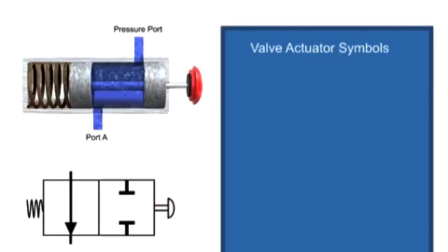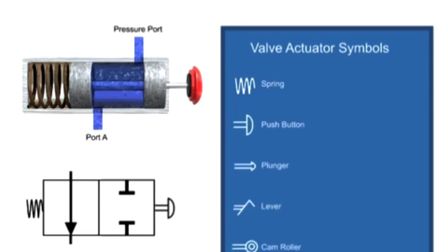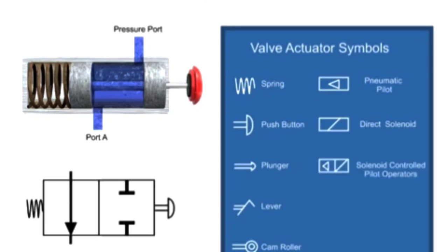Mechanical actuators change valve positions with springs, push buttons, plungers, levers, and cam rollers. Pneumatic pilots change valve position with a pressurized air signal. Electric solenoids that change valve positions by directly moving the valve element are called direct solenoids. Electric solenoids that open small pilot valves and allow pressurized air to move the valve element are called solenoid-controlled pilot operators.